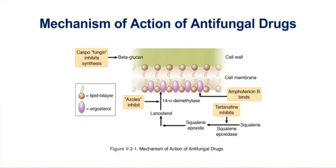The most common target for an antifungal drug is the membrane component ergosterol — it's fungal cholesterol. The drug Amphotericin B can bind ergosterol and actually opens up pores in the membrane, making the membrane very permeable, and that ends up killing the fungus.